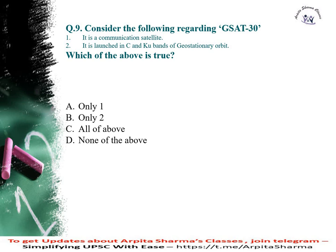Consider the following regarding GSAT-30. First, it is a communication satellite. Second, it is launched in C and KU band of geostationary orbit. Which of the above is true regarding GSAT-30?